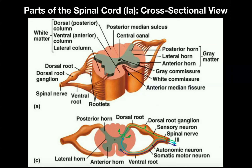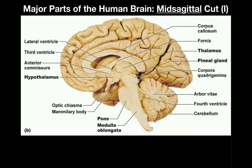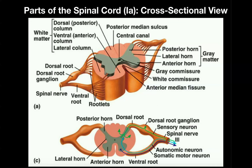Gray matter is really just the cell bodies of neurons, their dendrites, and any unmyelinated axons. The white matter, which is lighter in color, consists of myelinated axons. In the spinal cord, the white matter is all on the outside, and the butterfly-looking thing in the center is actually the gray matter. So in the spinal cord, the white matter is external and the gray matter is internal. This is actually opposite that of the brain — in the brain, the white matter is on the inside and the gray matter is external. So in that respect, the spinal cord and brain are flipped; they're opposite one another.